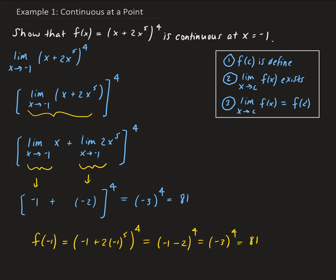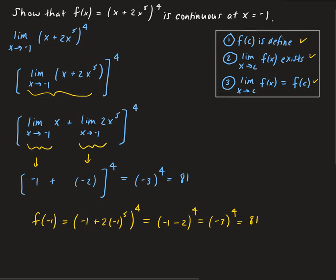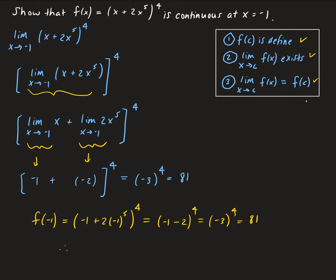So the function is defined at negative 1, the limit exists, and the limit of our function as x approaches negative 1 is equal to the function value at negative 1. Therefore, we can conclude that our function is continuous at negative 1.